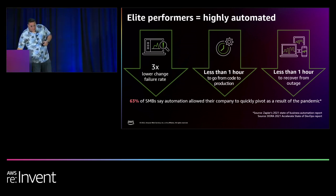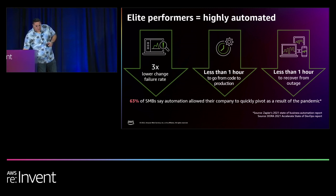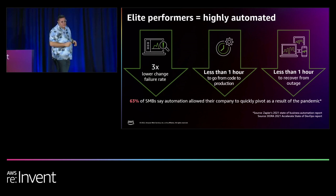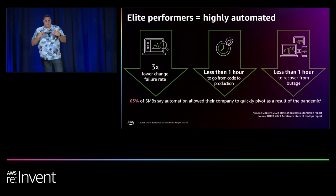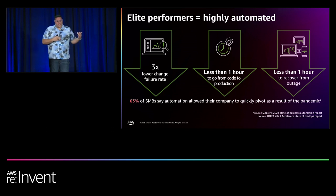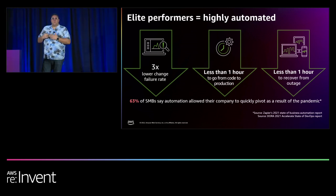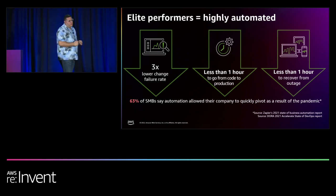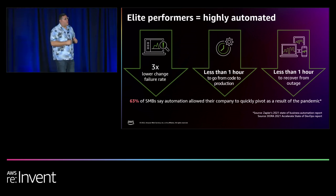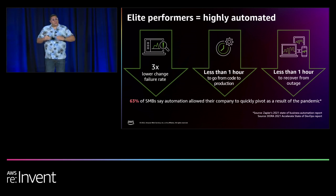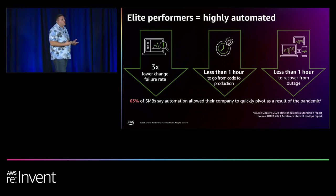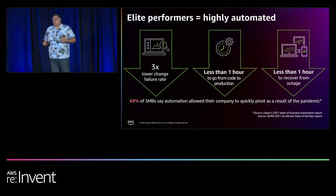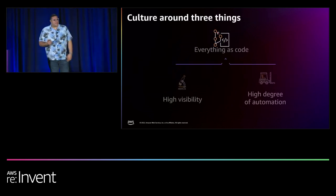These elite organizations can go from code to production in less than an hour, with security checks and quality assurance all done in an automated fashion — meaning they can respond to market changes very quickly. Because they're fully automated with all these checks, they're not only more agile but also more secure. And when there's an operational security event, they can recover their services within an hour. If you work in that organization, you're not always working nights and weekends — you can spend more time with your family.